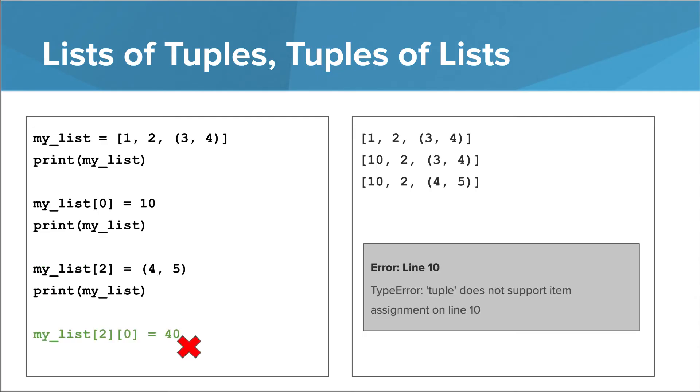Here's where we get into trouble. We access the thing at index 2 in my list, which is now the tuple. We then try to set the thing at index 0 in that tuple to 40. This is not allowed because this constitutes changing a tuple, which is against the rules.